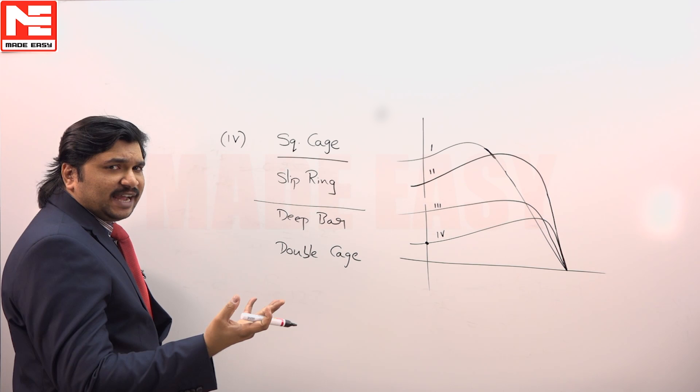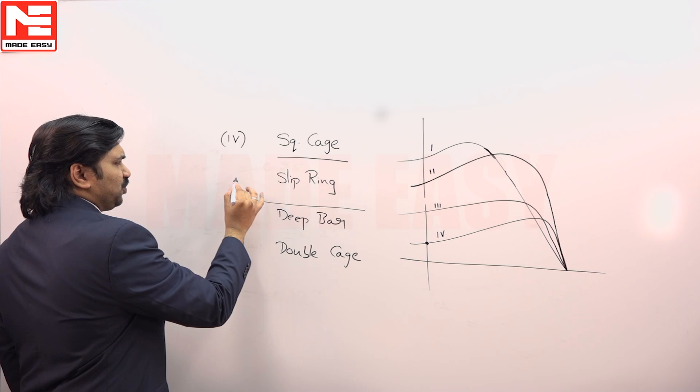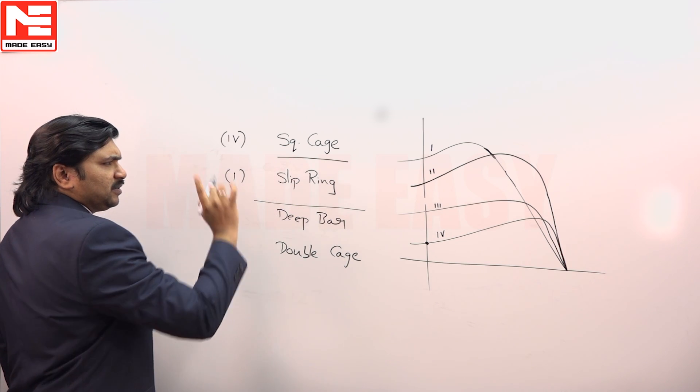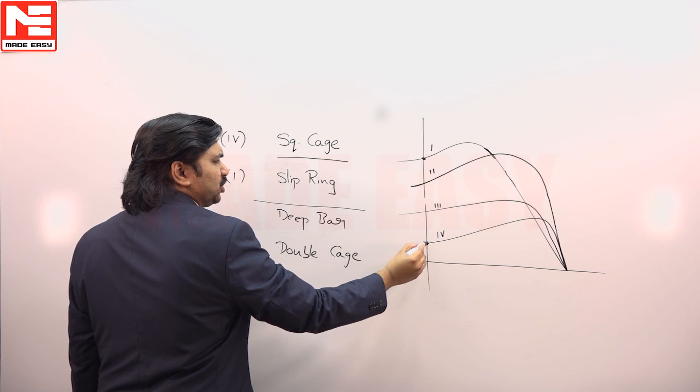We use them in traction, hoist applications. So when it comes to slip ring, the first one, highest starting torque. So the top one goes to slip ring motor, the bottom one goes to squirrel cage.